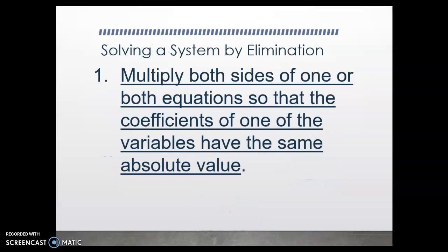Let's write down some steps. When solving a system by elimination or linear combination: multiply both sides of one or both equations so that the coefficients of one of the variables have the same absolute value — in other words, create a zero pair for one of your variables.